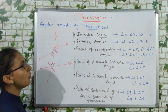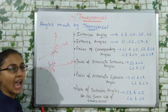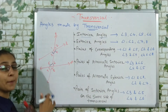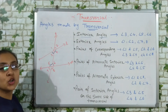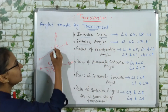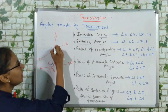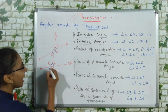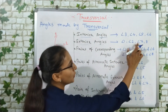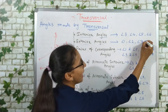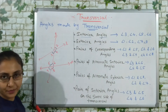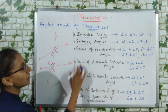Now, exterior angles — 'exterior' means the outside. The angles formed in the outer parts beyond the two lines are the exterior angles. So angles 1, 2, 7, and 8 are our exterior angles.